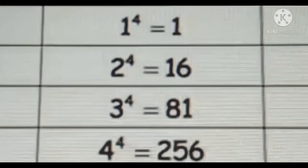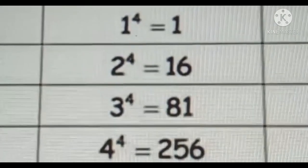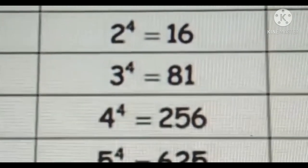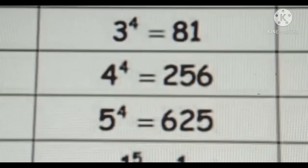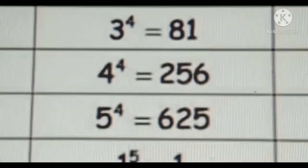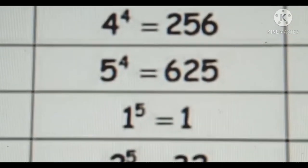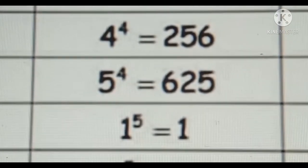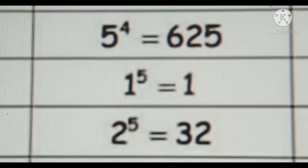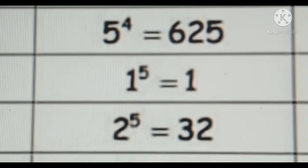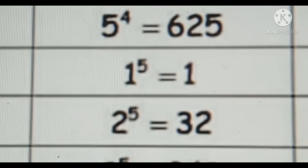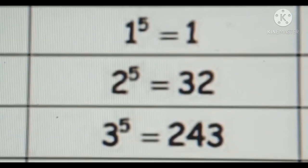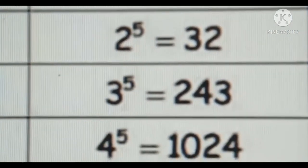1 to the power of 4 is equal to 1, 2 to the power of 4 is equal to 16, 3 to the power of 4 is equal to 81, 4 to the power of 4 is equal to 256, 5 to the power of 4 is equal to 625.